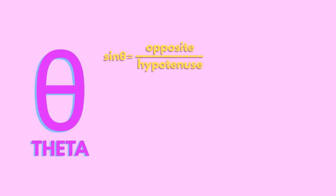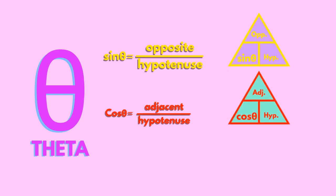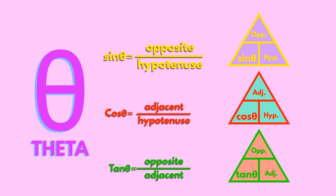The ratios of the length of sides are given special names. Let's say we have a known angle, theta. Sine theta equals the opposite divided by the hypotenuse. Cosine theta equals the adjacent divided by the hypotenuse. Tangent theta equals the opposite divided by the adjacent. Remember, SOH CAH TOA.